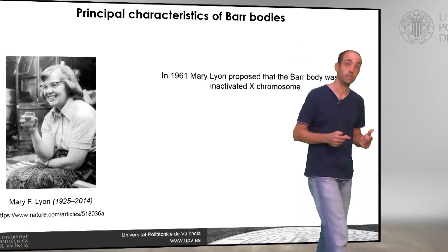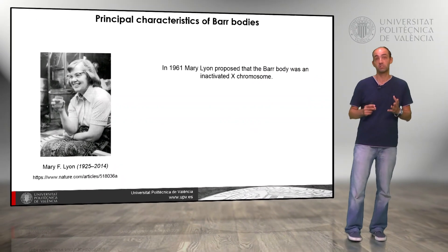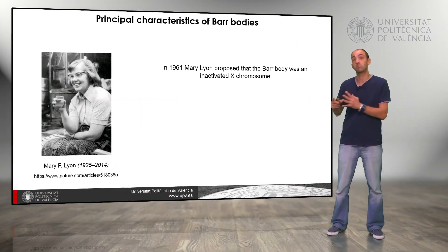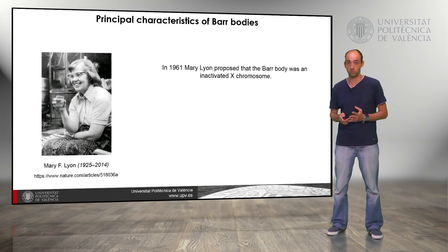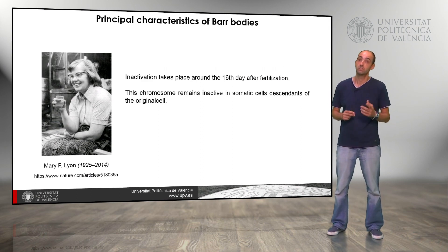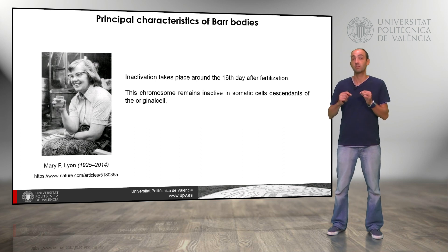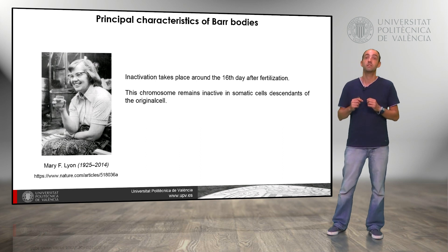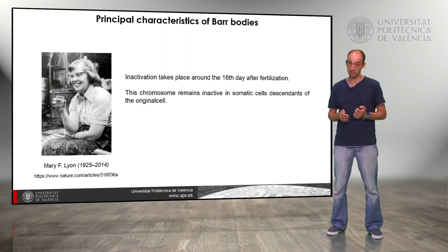Later, in 1961, Mary Lyon proposed that the bar body was an inactivated X chromosome. This inactivation takes place around the 16th day after fertilization, and the chromosome that is inhibited remains the same in the somatic cell descendants of the original cell.